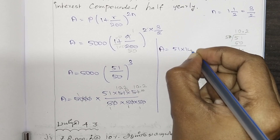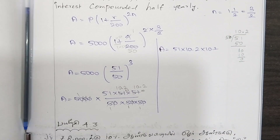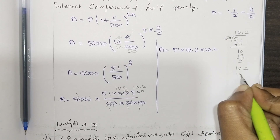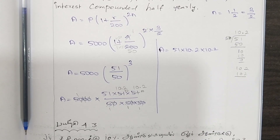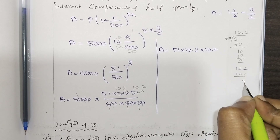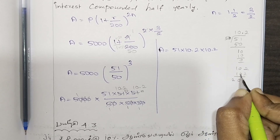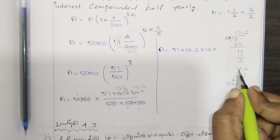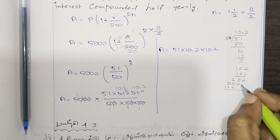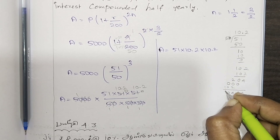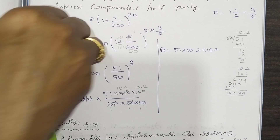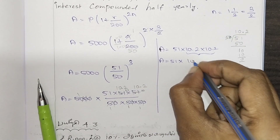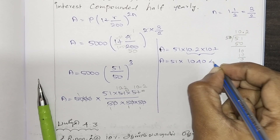Continuing: 51 into 102 into 102. We multiply 102 into 102. 2 into 4 is 4, 2 into 0 is 0, 2 into 1 is 2. Then multiplying by 102: we get 4, 0, 4, 0, 1 in the partial products. So we have 10404.